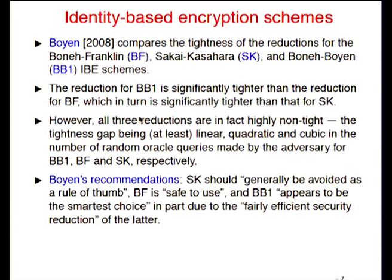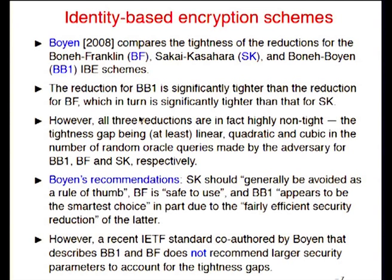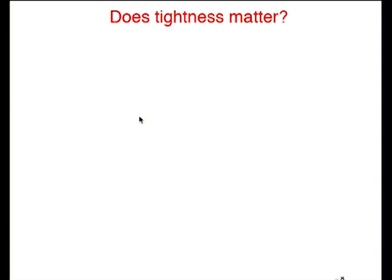Boyen recommends that SK should generally be avoided, Boneh-Franklin is safe to use, and BB1 appears to be the smartest choice, in part due to its fairly efficient security reduction. However, if you look at a recent IETF standard co-authored by Boyen for BB1 and BF, the parameters chosen for the standard are chosen without regard to the non-tightness of the proof — using the proof as assurance as if it were tight, when in fact it's highly non-tight. There is no uniform way of dealing with non-tight proofs, so the question becomes: does tightness really matter?